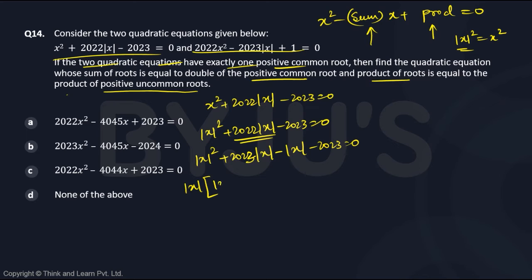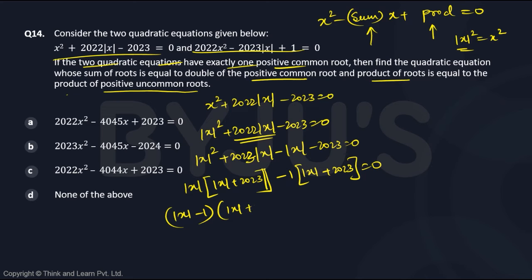Taking |x| common gives |x|(|x| + 2023), and taking −1 common gives −1(|x| + 2023) = 0. This results in (|x| − 1)(|x| + 2023) = 0. You will notice that |x| can be 1, or in the other case |x| = −2023, which is rejected because the modulus of a value can never be negative. So that solution is ruled out entirely.